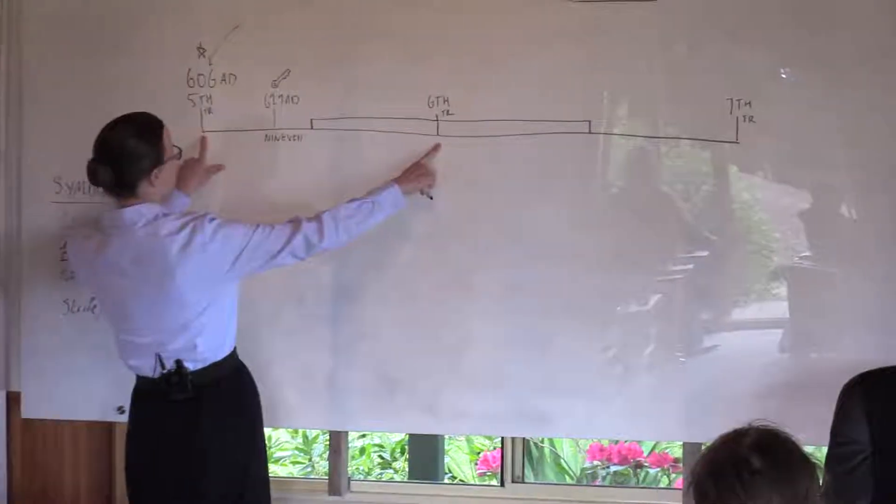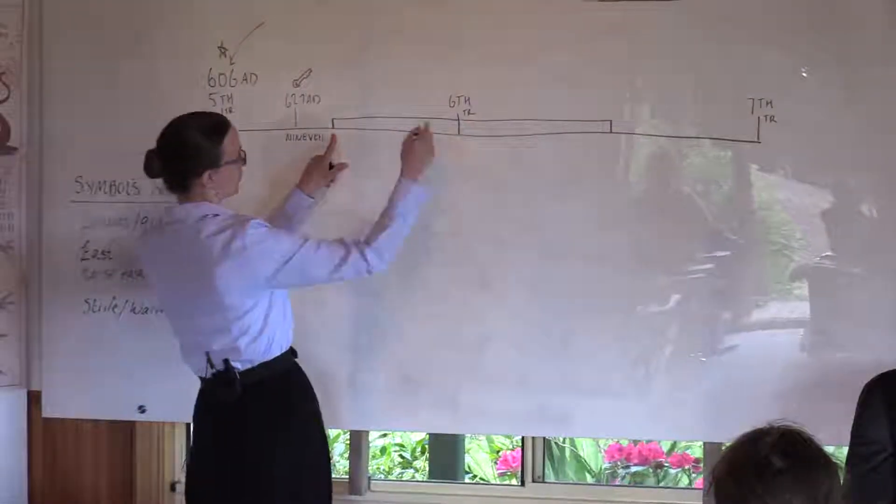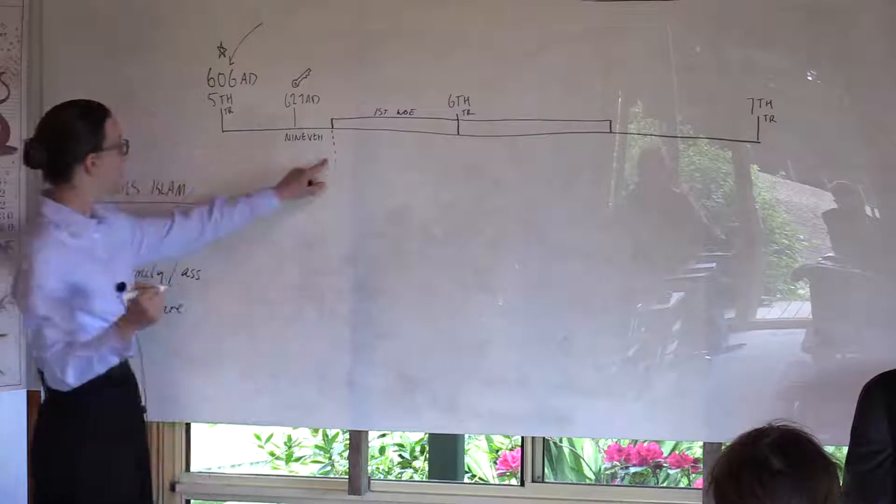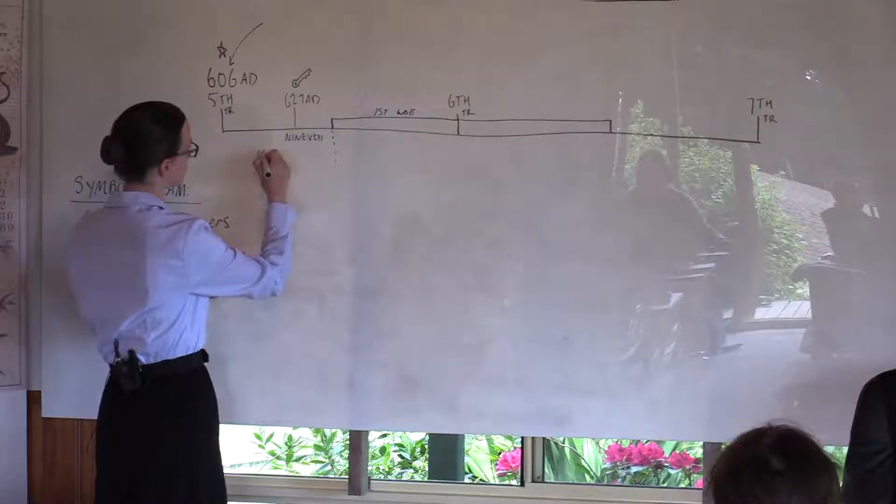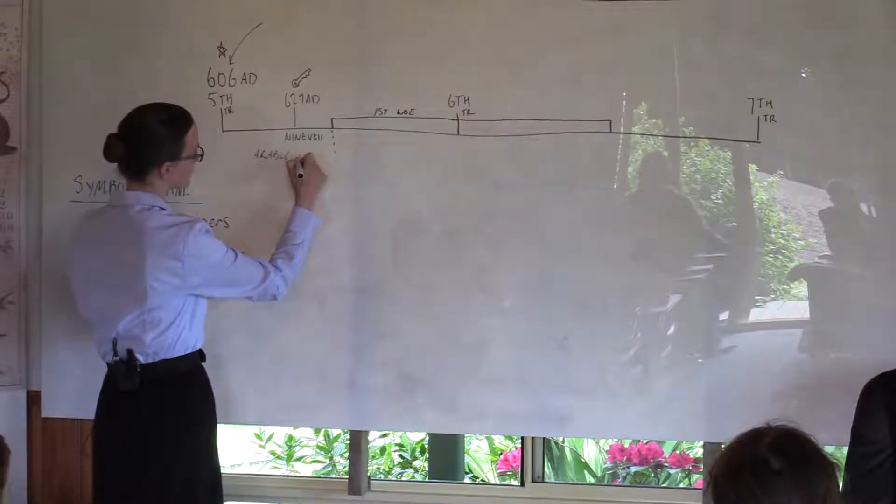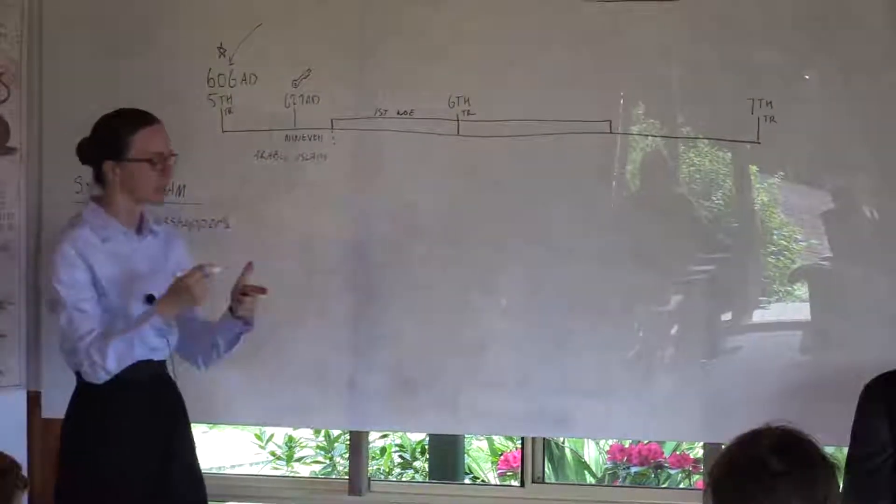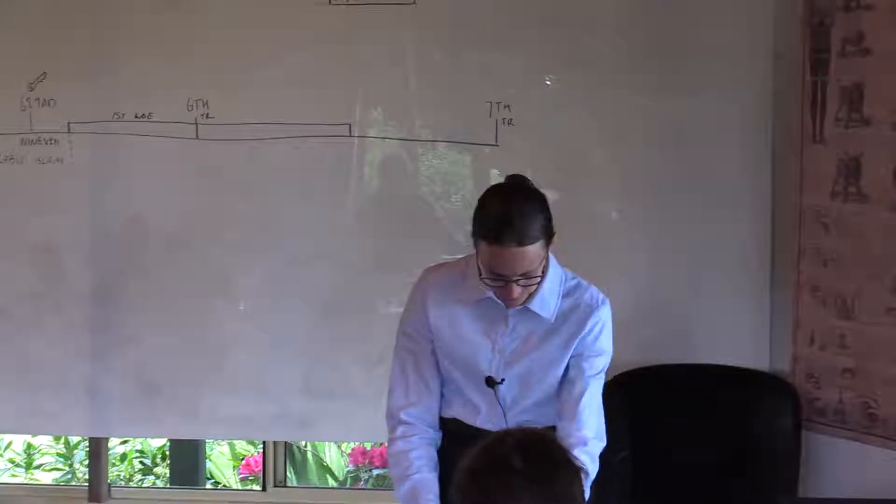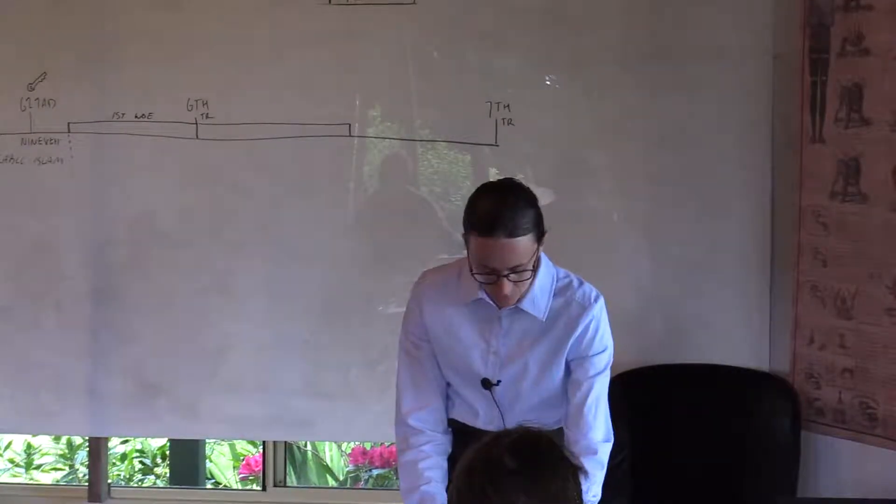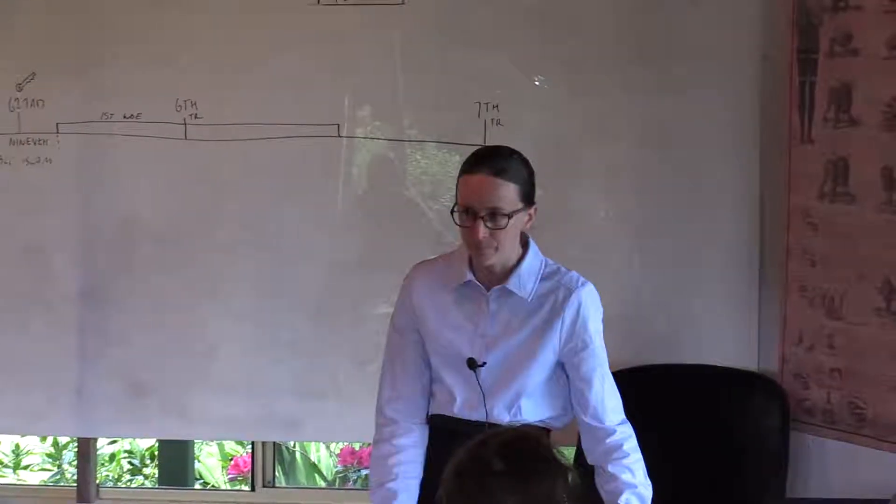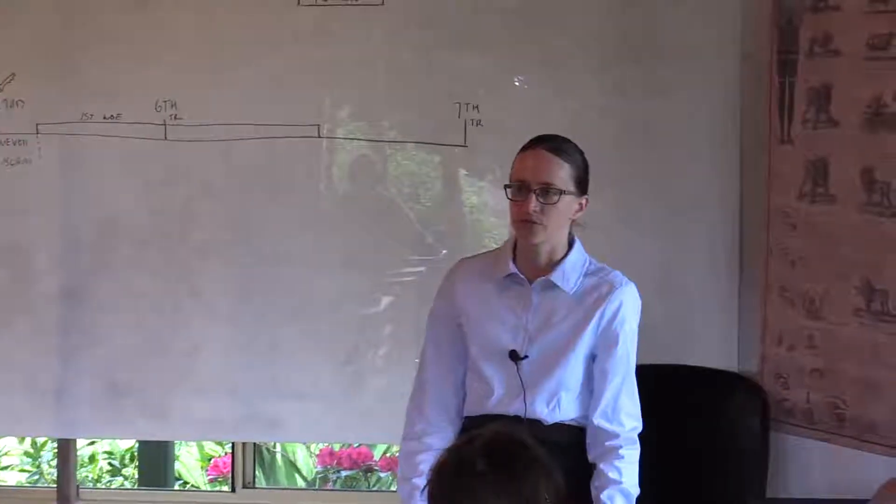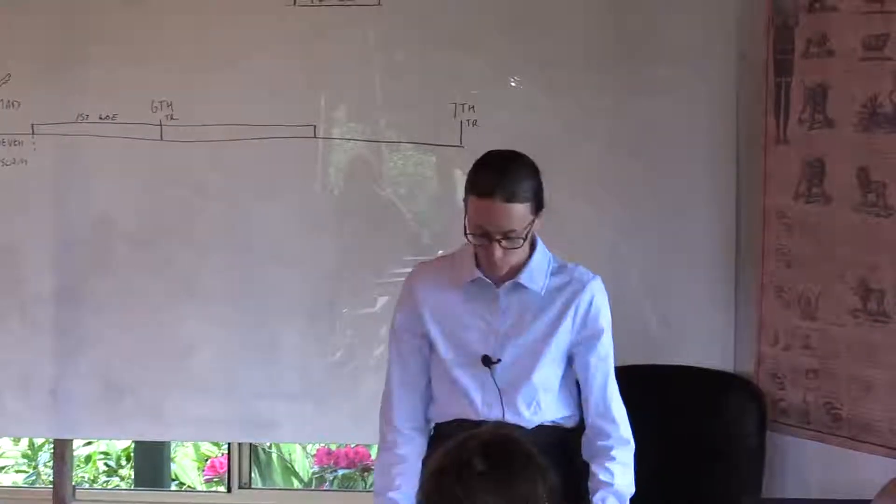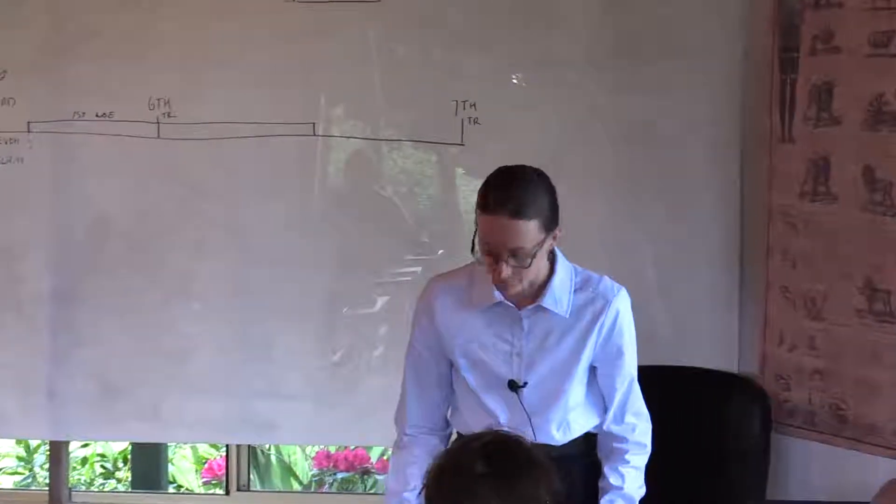So this here is the fifth trumpet. And this here is the first woe. This is Arabic Islam up to this point. And we're going to move into something different. So Abu Bakr's command was directed to Arabic Islam, which was restrained from destroying Rome. But in the second phase of the fifth trumpet, which is the first woe, we'll see a different group of Muslims being addressed.